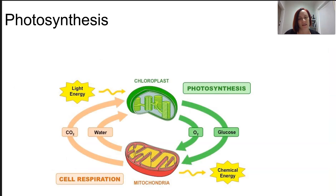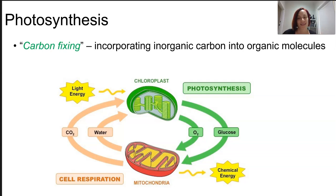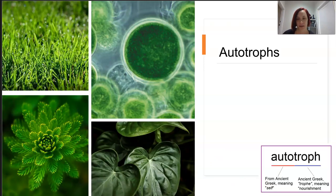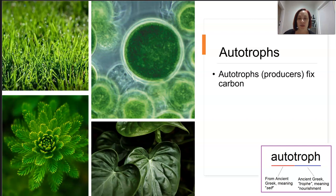Photosynthesis and cellular respiration are complementary processes — they have reverse products and reactants, but they are different biochemical pathways, so we don't truly call them reverse reactions. Photosynthesis is a process of carbon fixing, meaning we're taking inorganic carbon and incorporating it into organic molecules. Autotrophs, which are our producers, are the organisms that fix this carbon, taking light energy and turning it into chemical energy — these are photo-autotrophs, or in the case of chemo-autotrophs, they use chemicals around them.